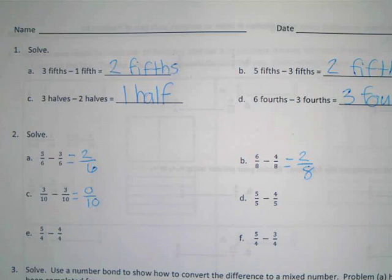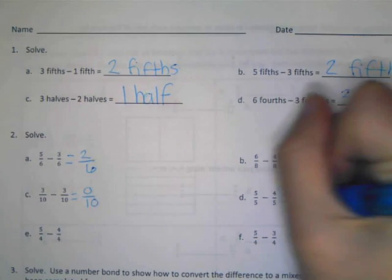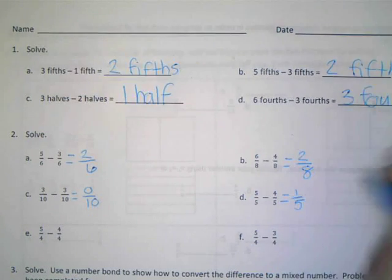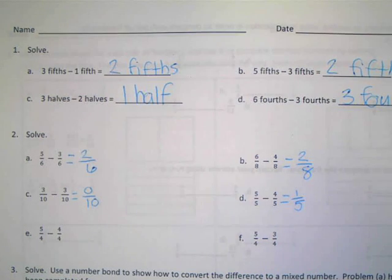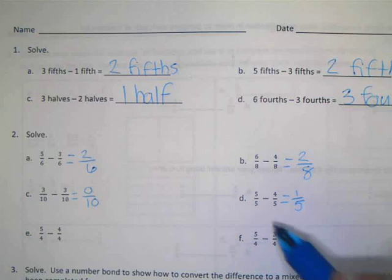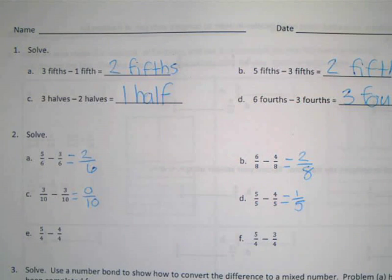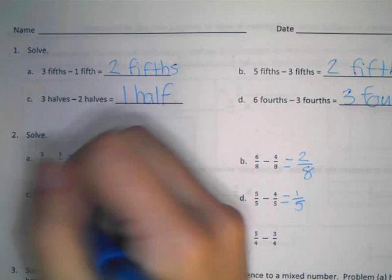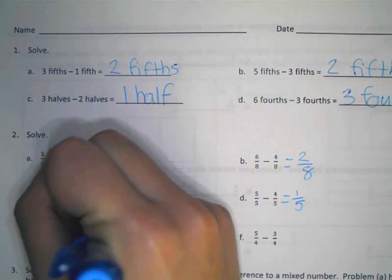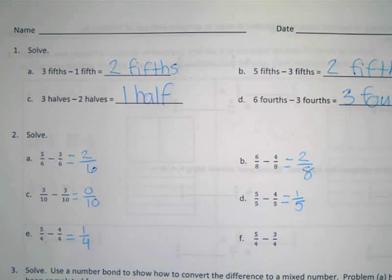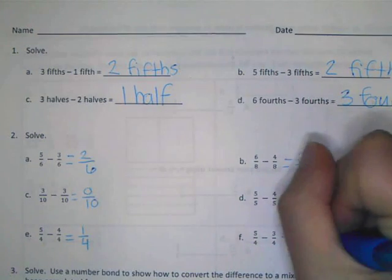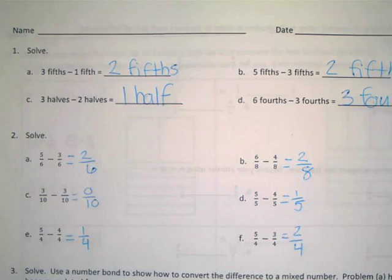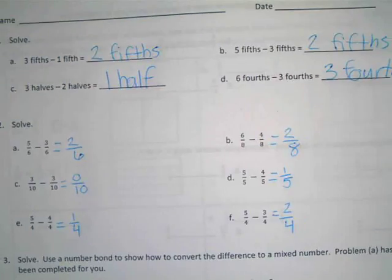Five-fifths take away four-fifths. One-fifths. Don't let the bottom number mix you up, right? Because you just have to bring it over. Five-fourths take away four-fourths. One-fourths. Five-fourths take away three-fourths. Three-fourths. Great job.